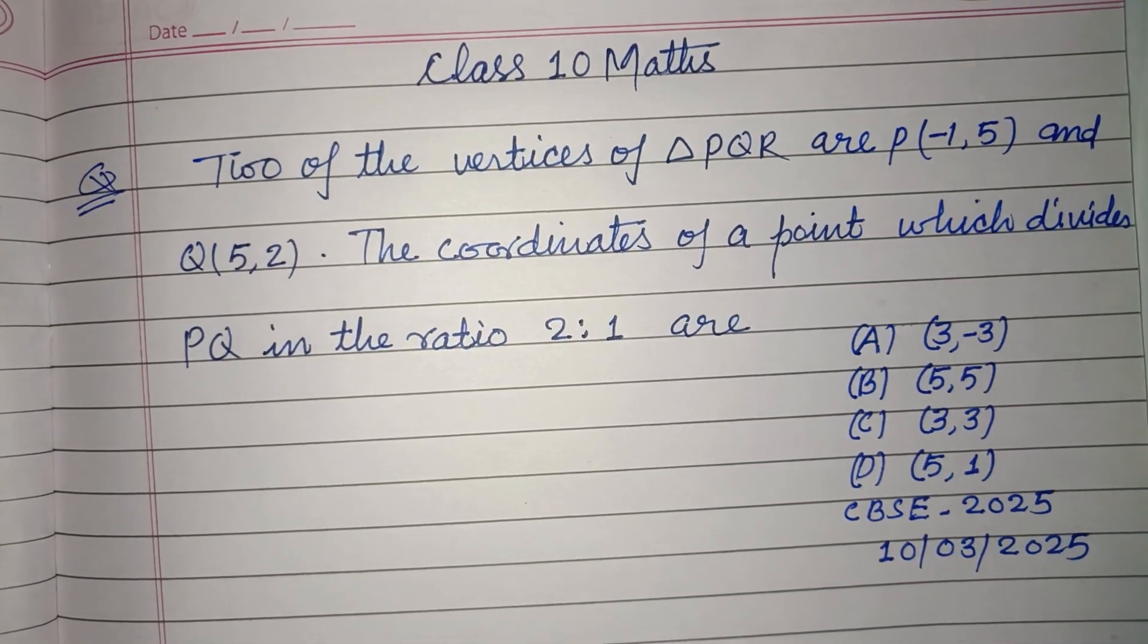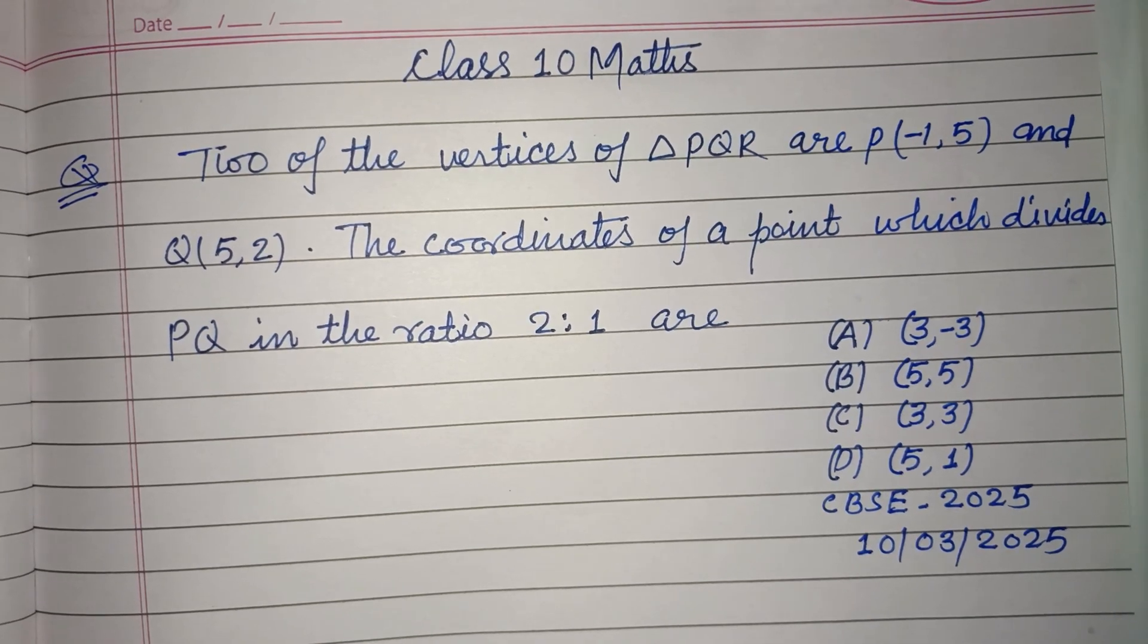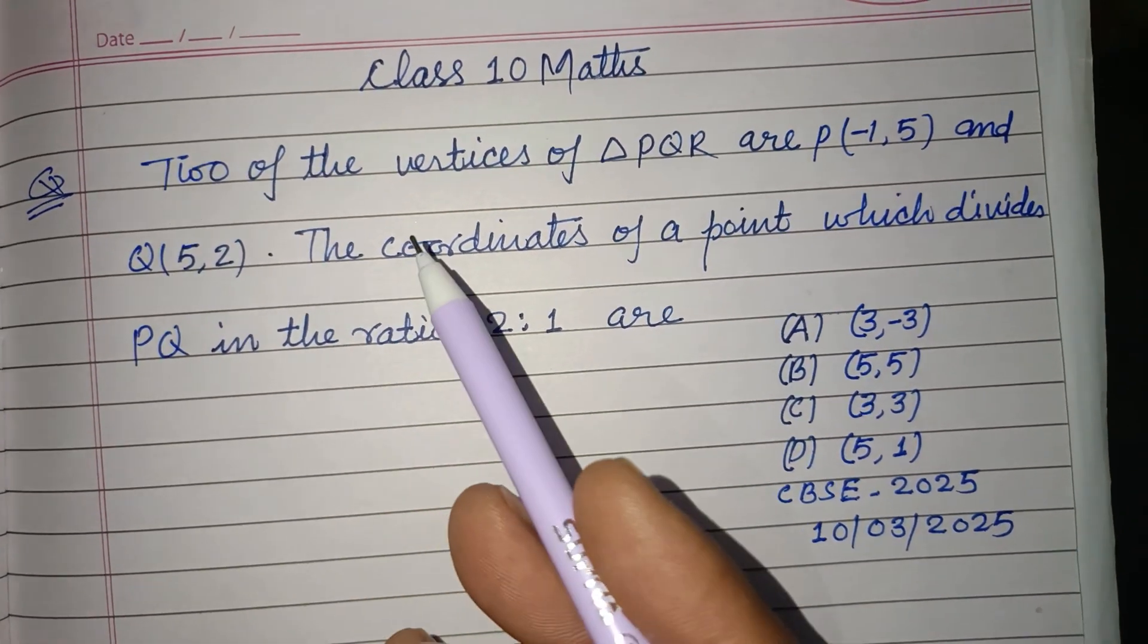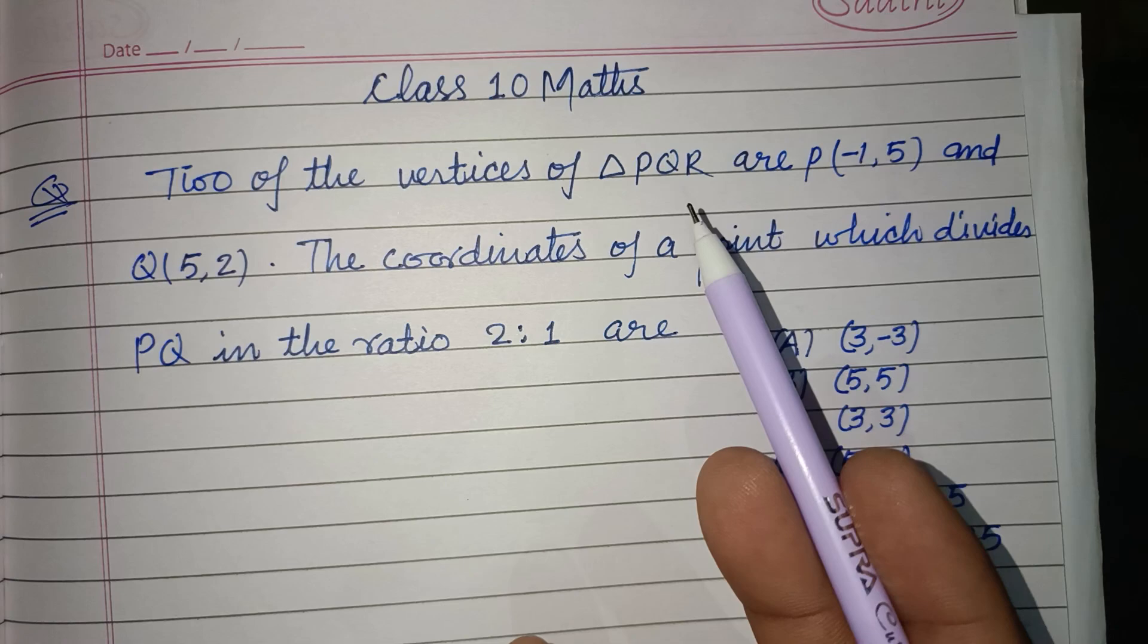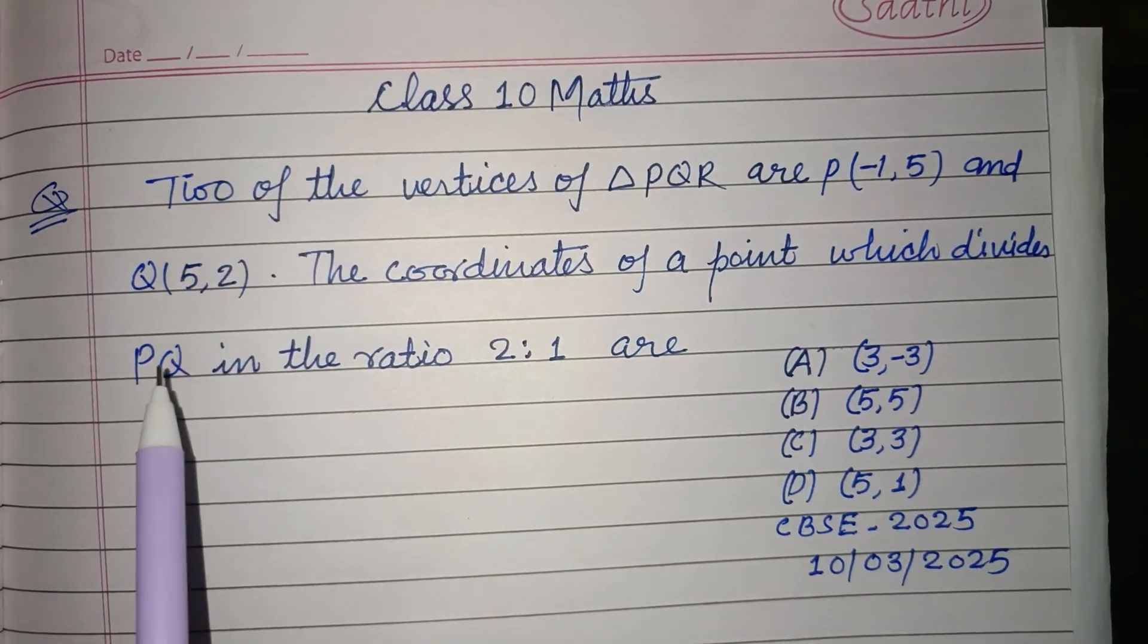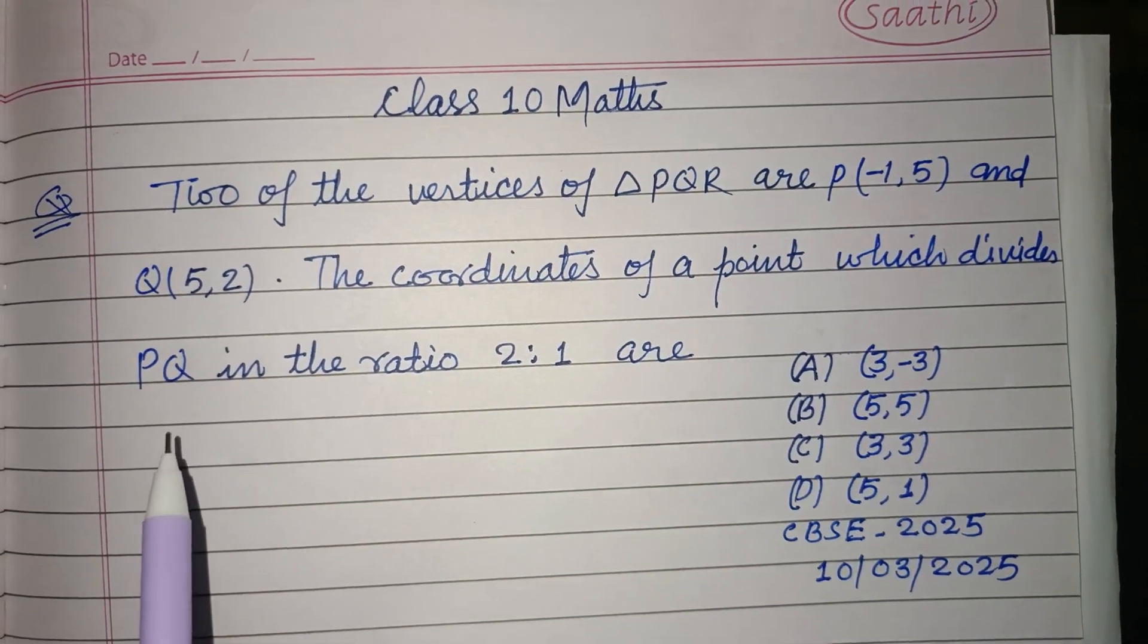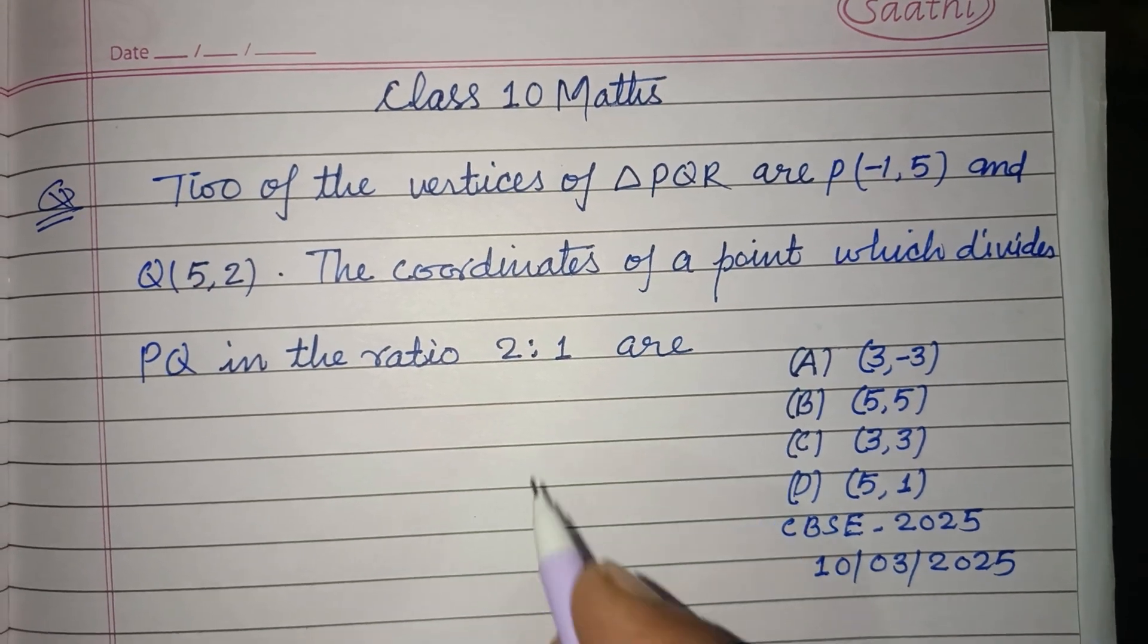Hello viewers, warm welcome to this YouTube channel. Question from CBSE Board Exam 2025: Two of the vertices of triangle PQR are P(-1,5) and Q(5,2). The coordinates of the point which divides PQ in the ratio 2:1 are: